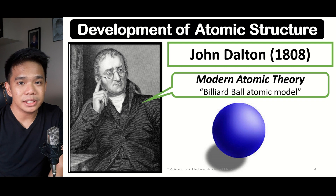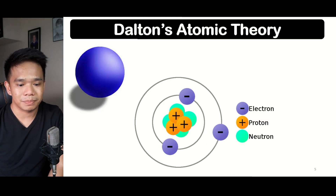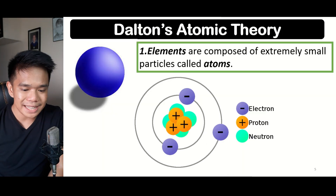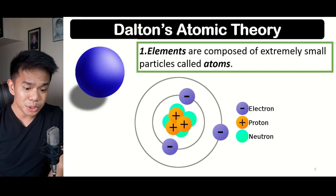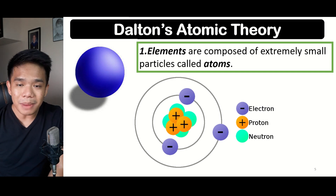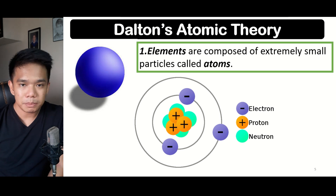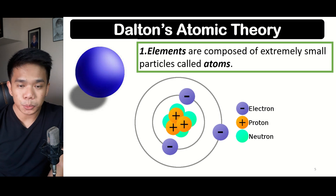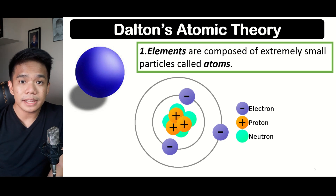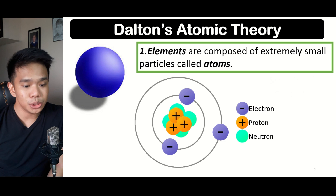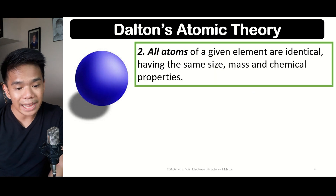The first postulate states that elements are composed of extremely small particles called atoms — a term coined from Democritus's Greek term 'atomos.' However, this first postulate has since been disproven, simply because the atom is itself made up of different subatomic particles: the electrons, the protons, and the neutrons.